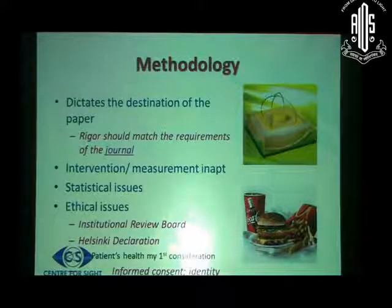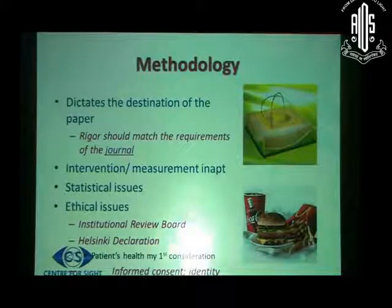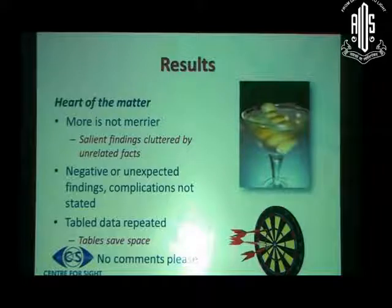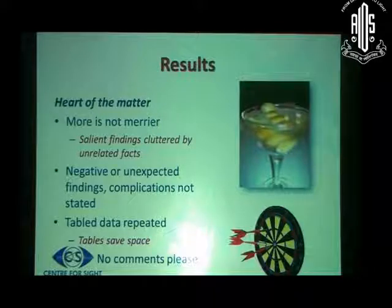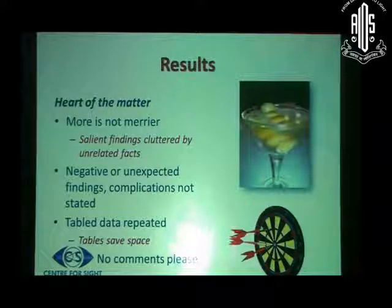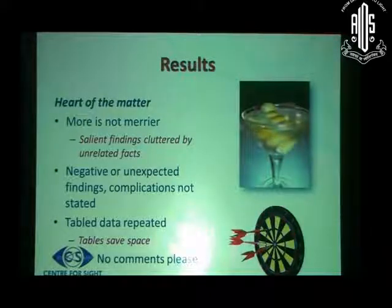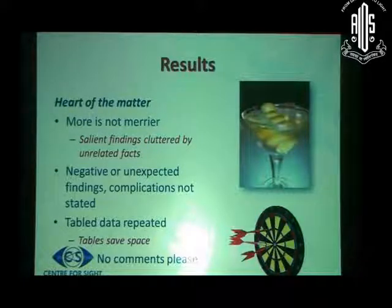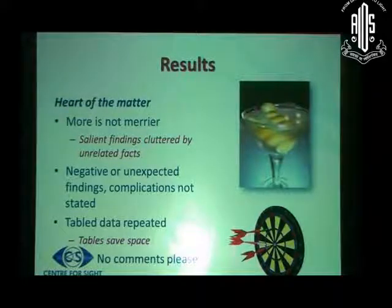Taking informed consent is a very important thing — for British Journal of Ophthalmology specifically, they want a PDF of the patient's consent to be submitted with the paper. Regarding results, we have to understand that more is not necessarily the merrier. Our salient findings may get cluttered by unrelated facts, or sometimes negative or unexpected findings or complications may not be stated, and this does not escape the eyes of the reviewer. Sometimes table data is repeated — tables are there to save space, not to repeat the data, and they are not a place to comment on the data at all.